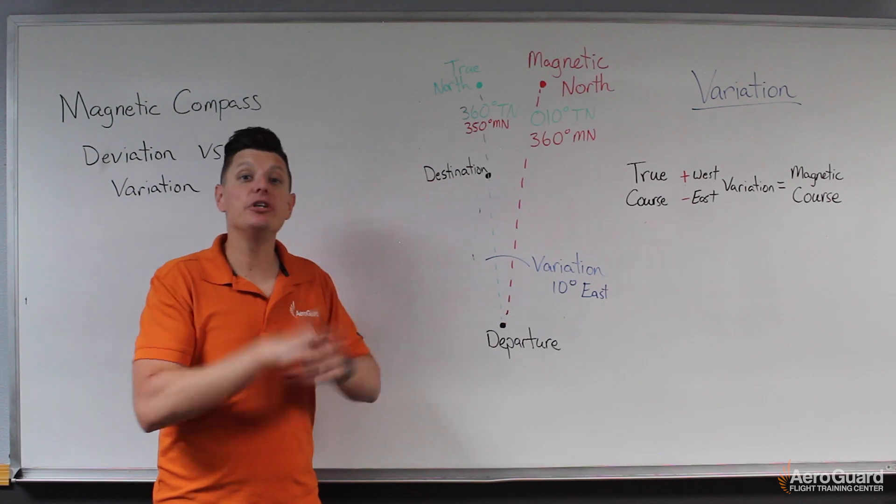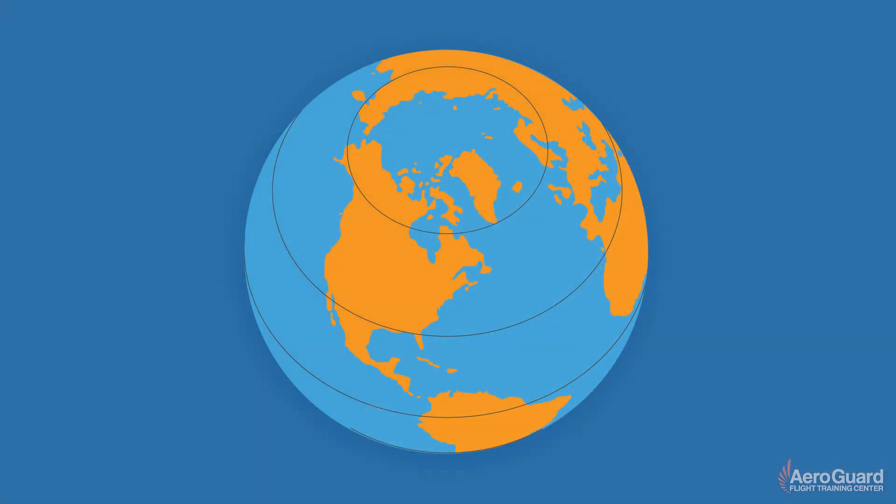So on the screen now, there is an image of kind of the earth and we can see true north is at what we call like the top of the earth, for example, and magnetic north is at this location kind of offset. In fact, magnetic north is constantly moving. It moves a little bit every year.